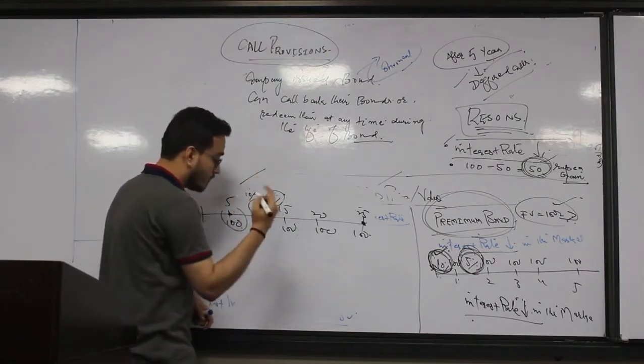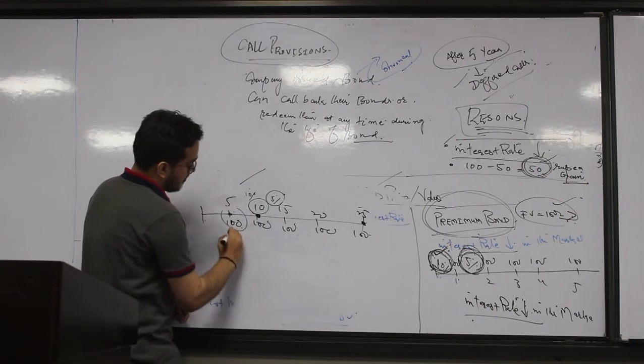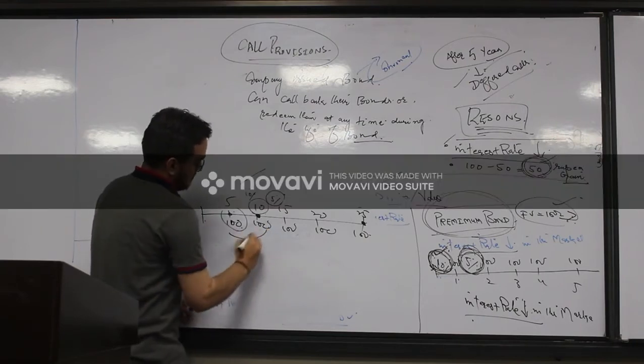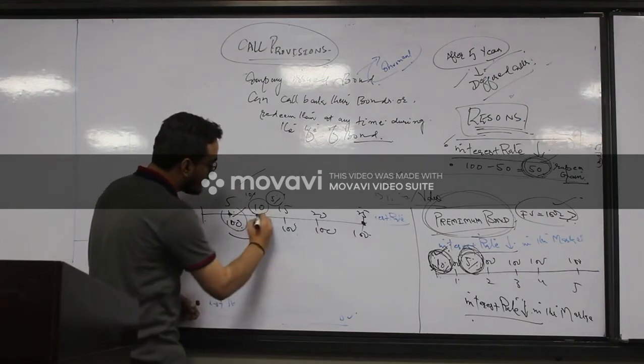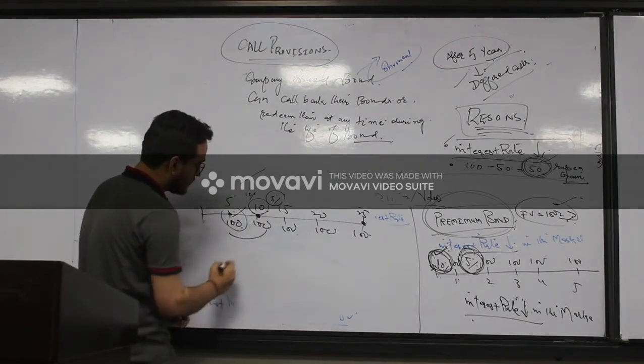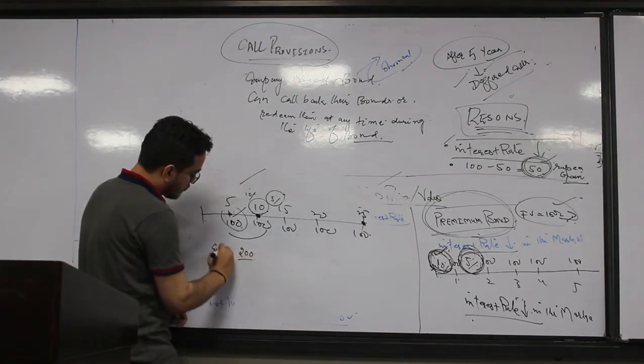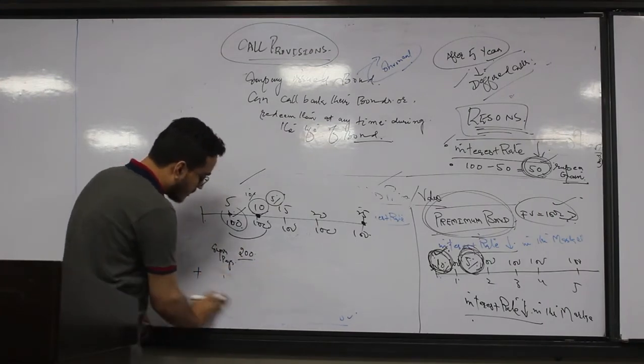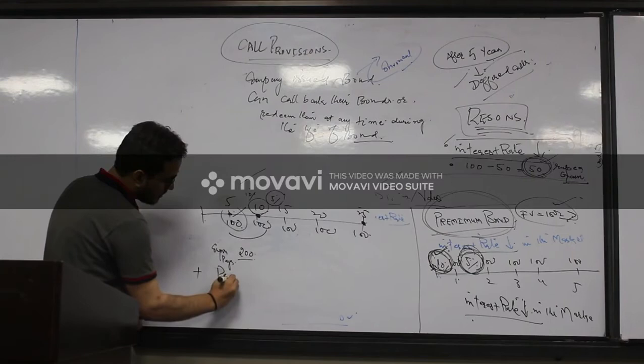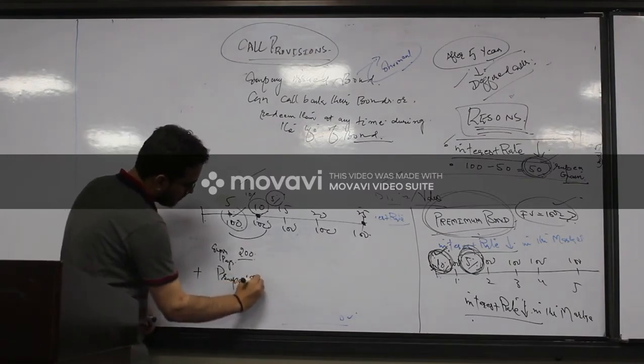Now what benefit is company offering you? Yes, company is offering you one benefit. You have already got two hundred coupon payments. Plus company is giving you back your principal one thousand.